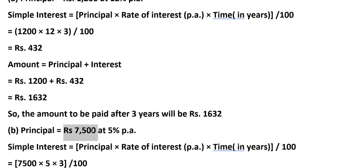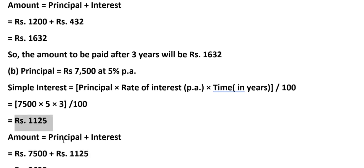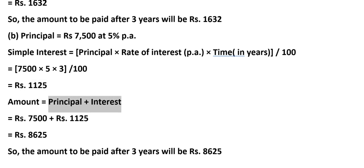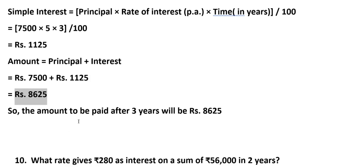(B) Principal = Rs. 7,500 at 5% per annum. Simple Interest = (7,500 × 5 × 3) ÷ 100 = Rs. 1,125. Amount = Principal + Interest = Rs. 7,500 + Rs. 1,125 = Rs. 8,625. So the amount to be paid after 3 years is Rs. 8,625.